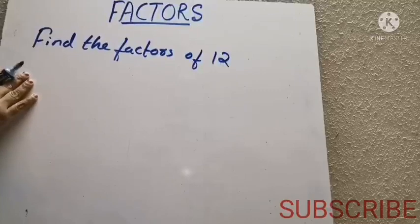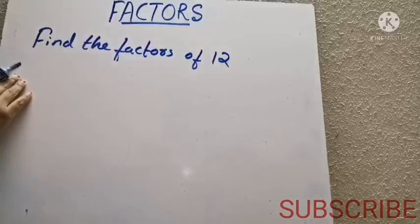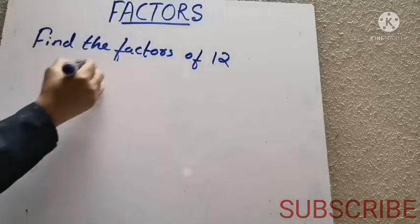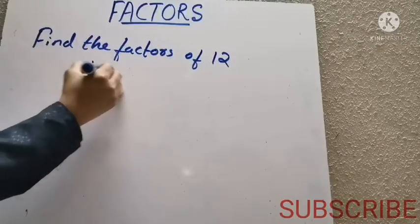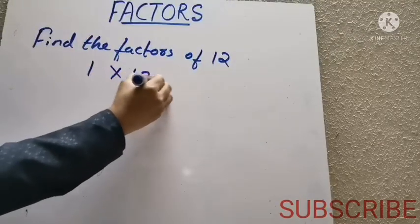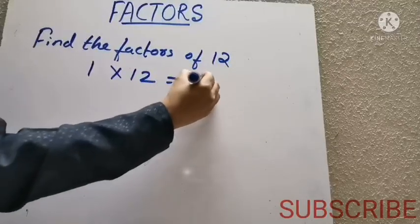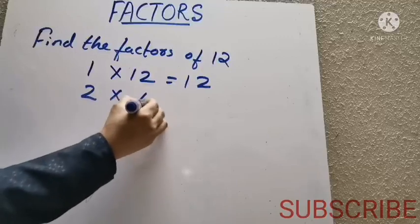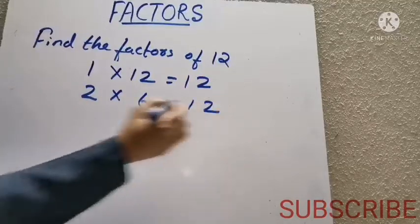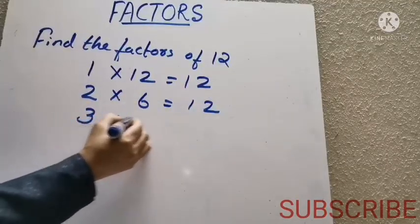Let's check another example: find the factors of 12. Which are the factors of 12 that we want to find? So first, 1 into 12 equals 12. 2 into 6 equals 12. 3 into 4 also equals 12.